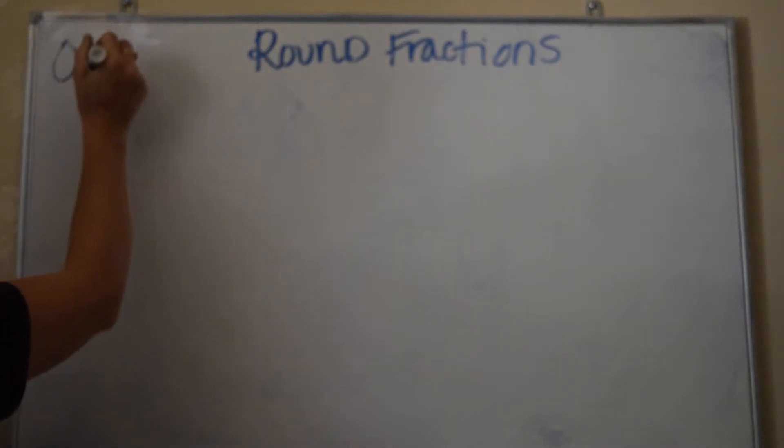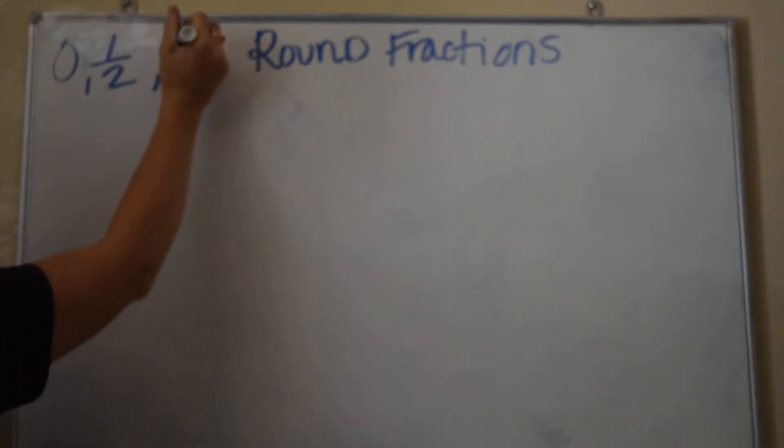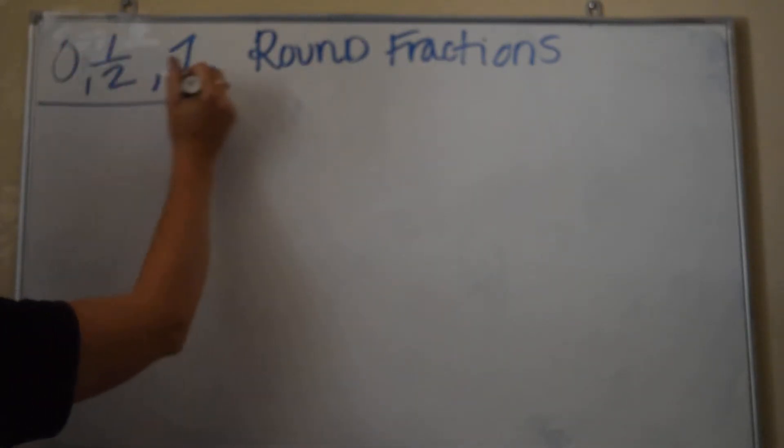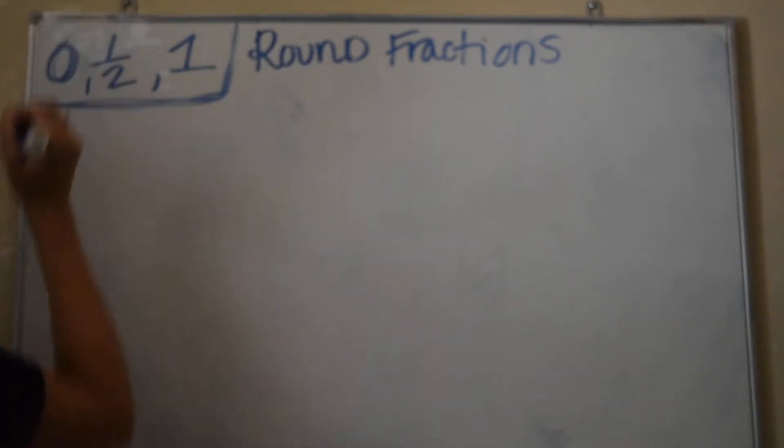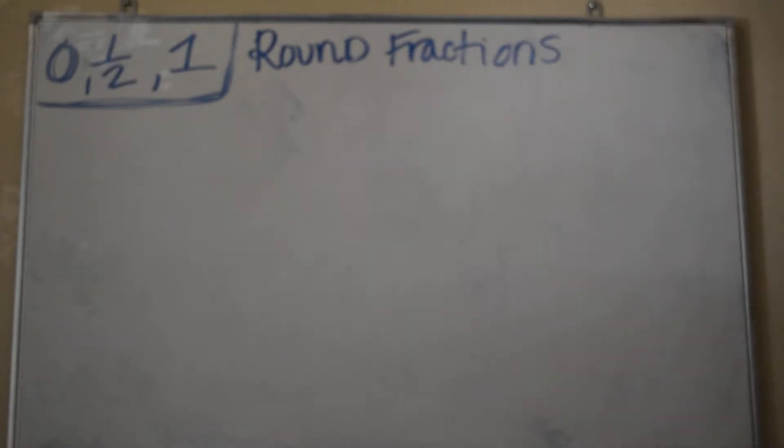So we always have benchmark fractions to round to. We're going to either round it to a zero, a half, or a whole. Those are our benchmark fractions, which means those are going to be our three possible answers. If you're following along in McGraw-Hill, I am chapter 9, lesson 1.